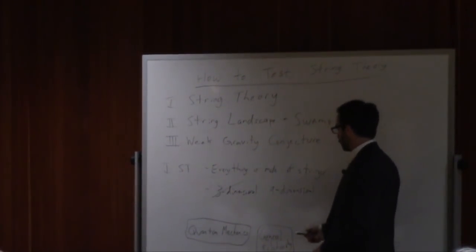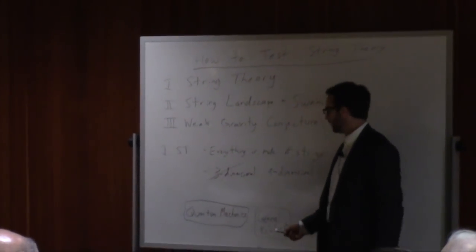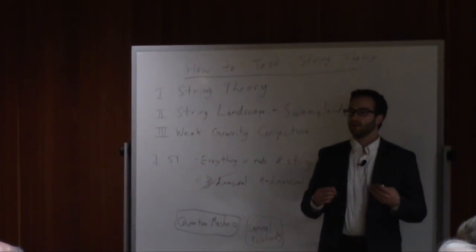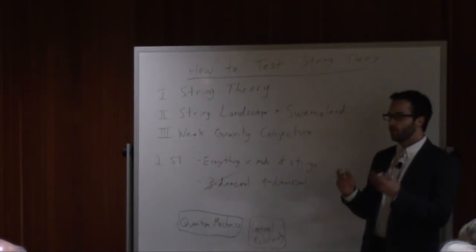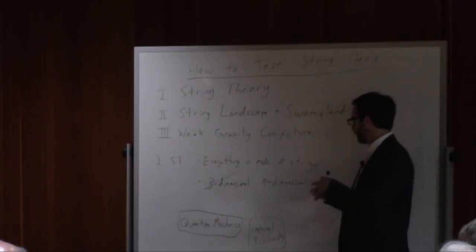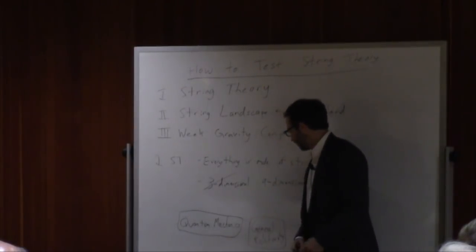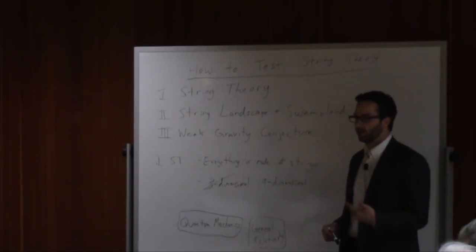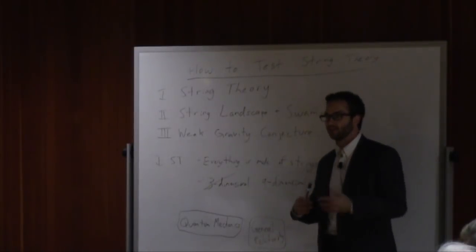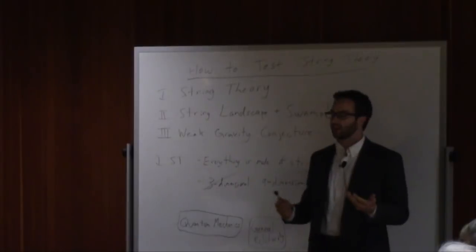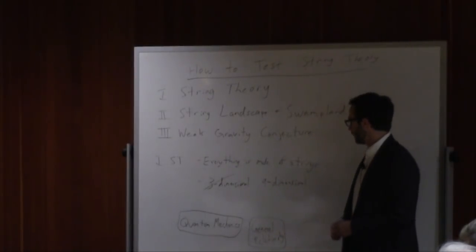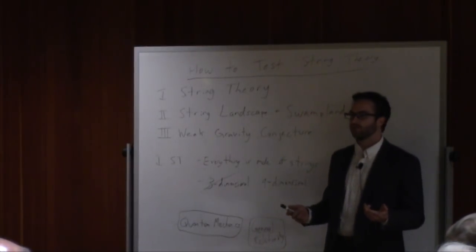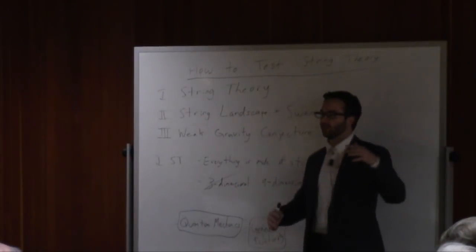Each of these theories is remarkably well tested. Each of them works phenomenally for describing small things and heavy things, respectively. But you can ask: what about things that are both small and heavy — in the overlapping domain of validity between quantum mechanics and general relativity? What you find is that when you try to write down the equations that describe these things, you get nonsense. You compute things like infinite probabilities. And what that's telling you is that neither quantum mechanics nor general relativity are the whole story. They're incompatible with each other, which means you need something new.